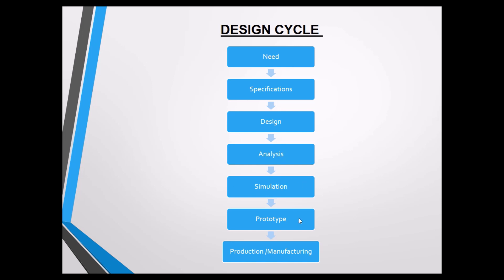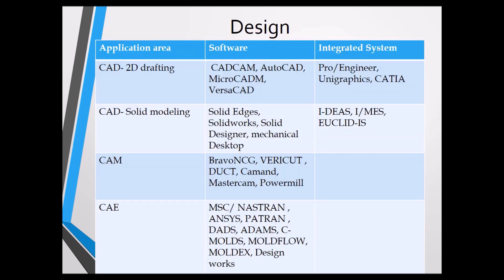Next we prepare a prototype — a sample piece — before manufacturing. In that sample piece we test whether it is suitable for our final product. After these steps, the total design specifications and materials go for production or manufacturing, where complete production of the components is prepared. This completes the design cycle.